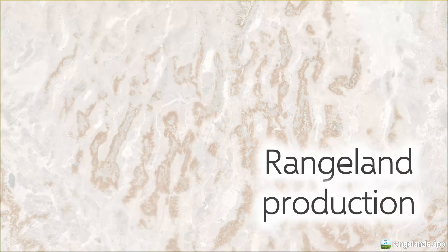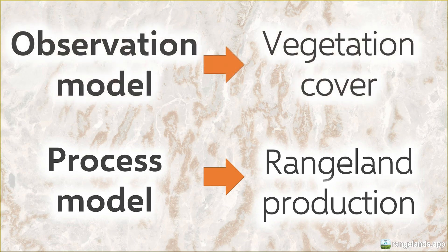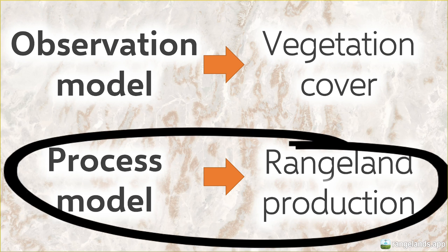The first thing you should know about how this dataset is produced is that we use a process-based model. This is distinctly different from the type of model used to produce the vegetation cover dataset, which is an observation-based model. Here we're explicitly modeling the process of plant growth, and for that reason this model is more intuitive than the vegetation cover model, even though it's actually more detailed — because it's really just modeling photosynthesis.